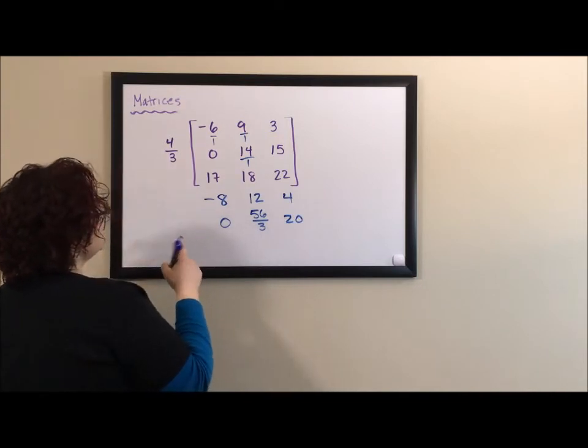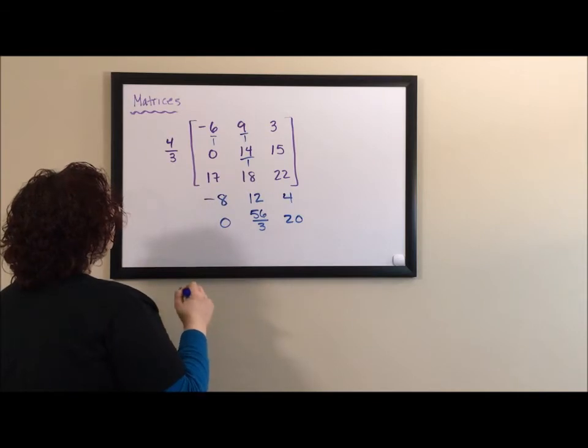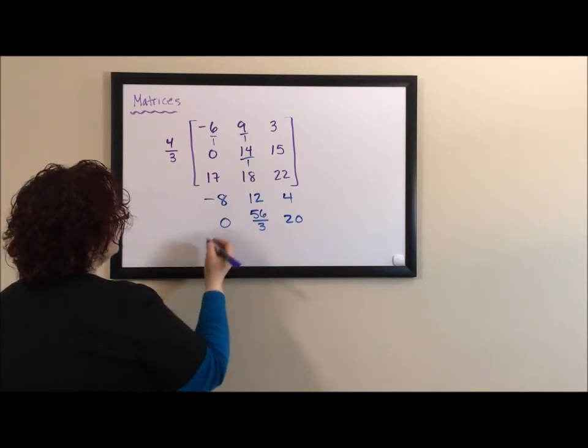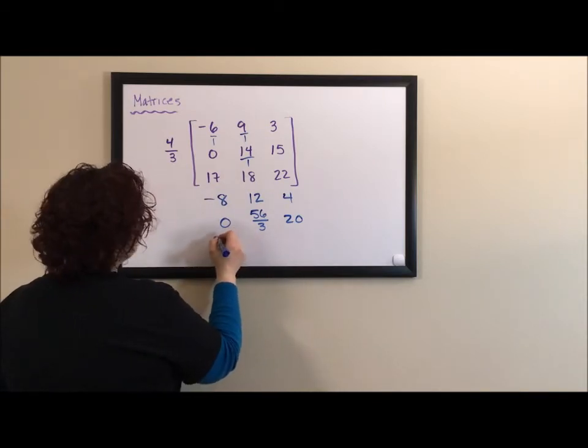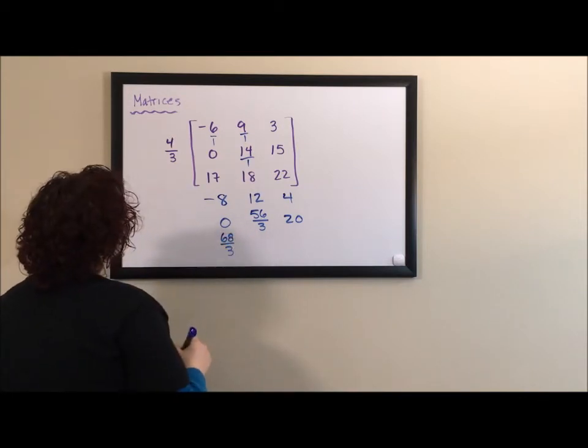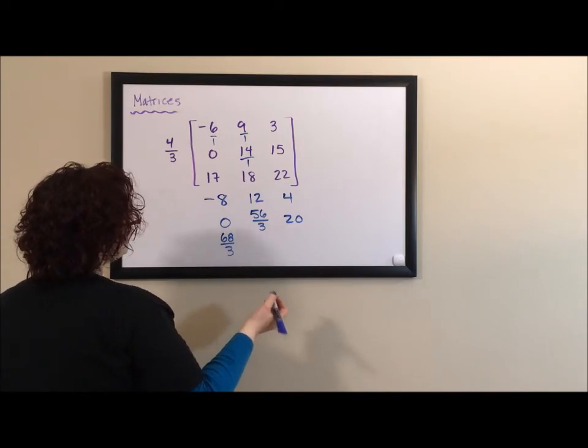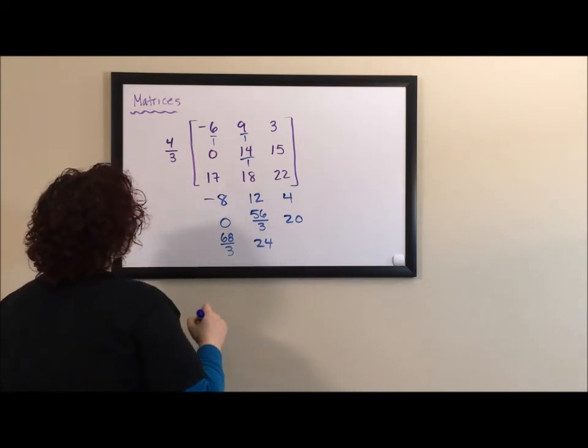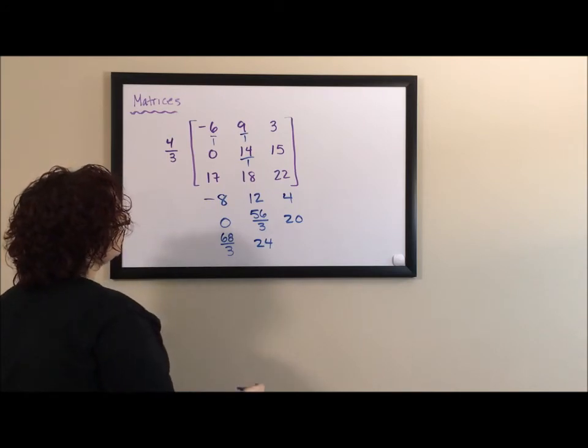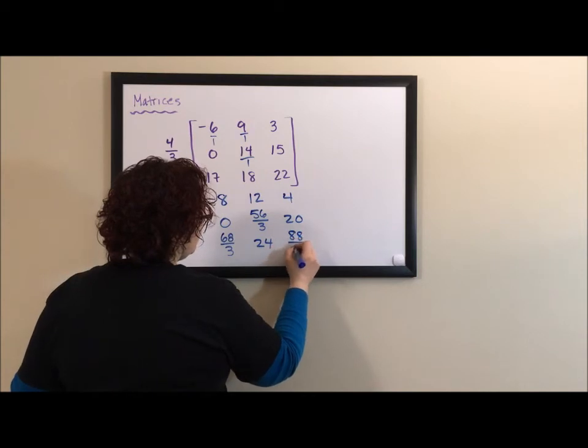Seventeen doesn't divide by three, so three doesn't divide into seventeen. Four times seventeen is sixty-eight, so we have sixty-eight over three. Three does go into eighteen six times. Six times four is twenty-four, and three does not go into twenty-two. Four times twenty-two is eighty-eight over three.